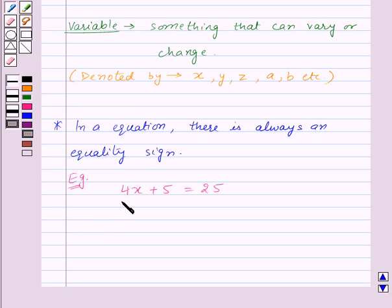The equality sign shows that the value of the expression to the left of the sign, that is the left hand side or LHS, is equal to the value of the expression to the right of the sign, the right hand side or RHS. In this equation, LHS is 4x plus 5 and RHS is 25. So in this equation, LHS 4x plus 5 is equal to RHS that is 25.